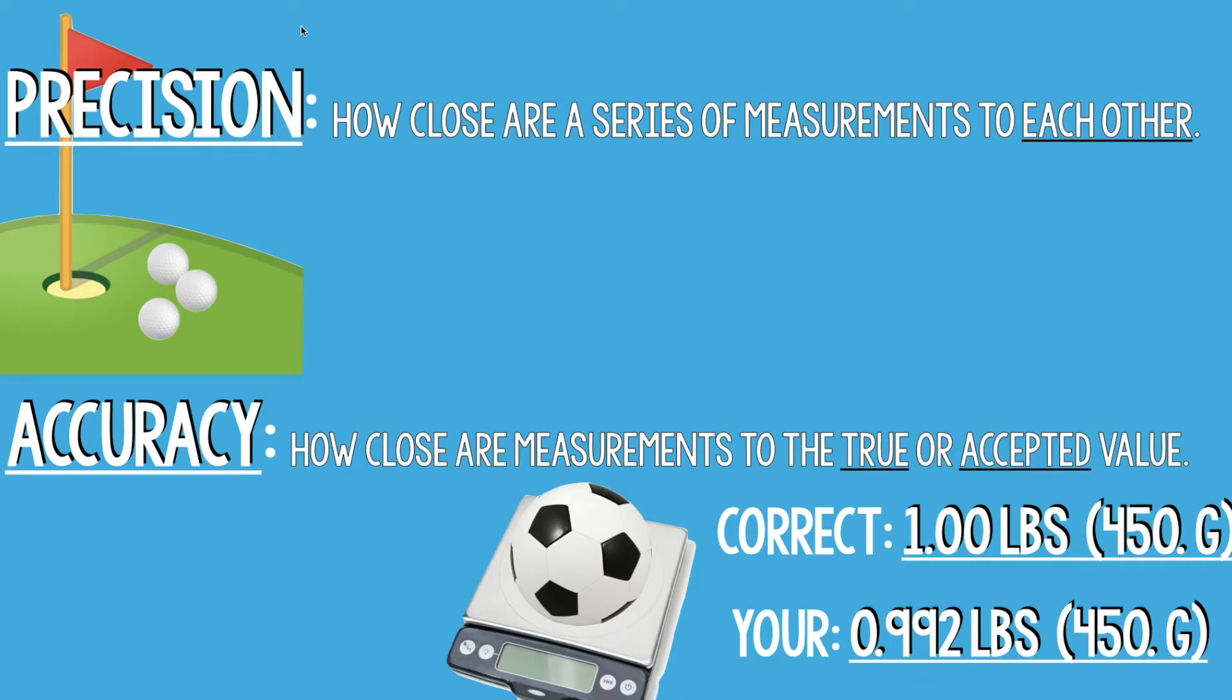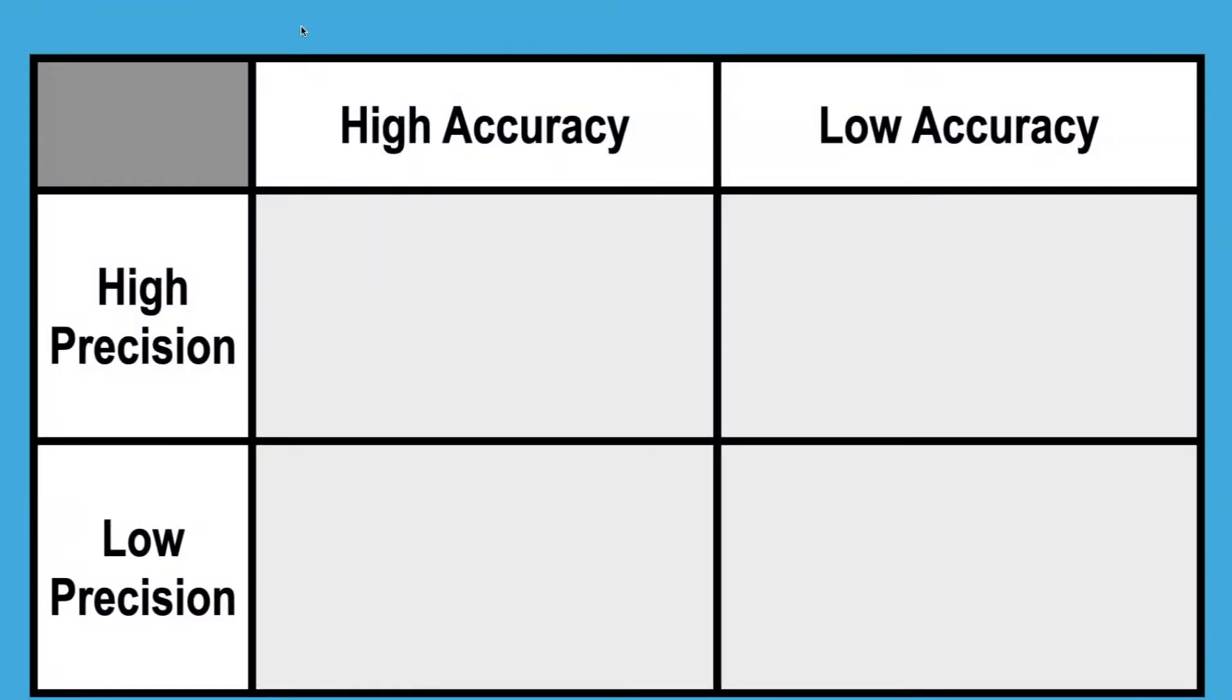Accuracy: how close are measurements to the true or accepted value. Let's say I ask you to weigh a soccer ball. The correct answer was 1.00 pounds, you get 0.992 pounds. Again, really close to the correct answer or the correct value, therefore really good accuracy.